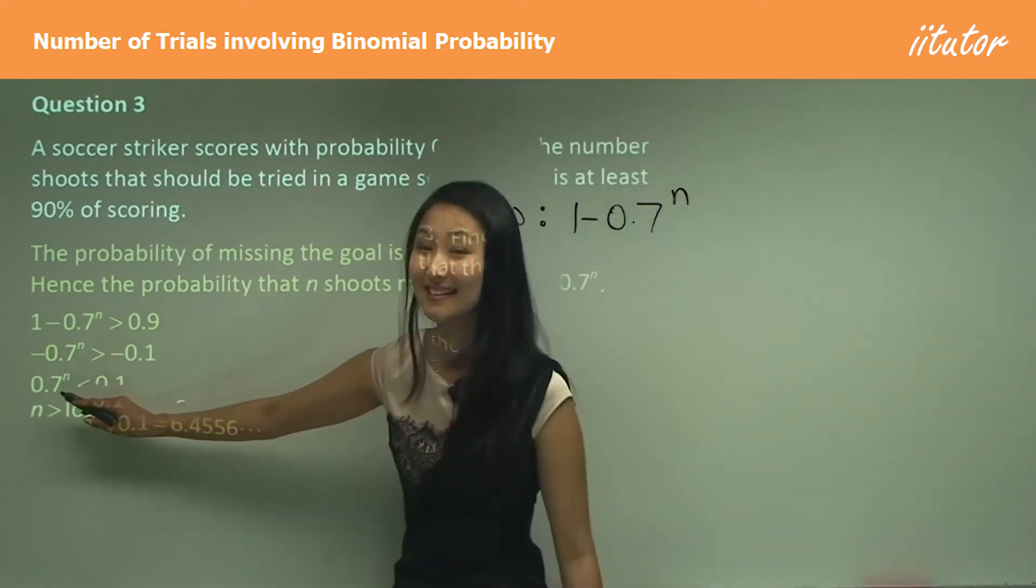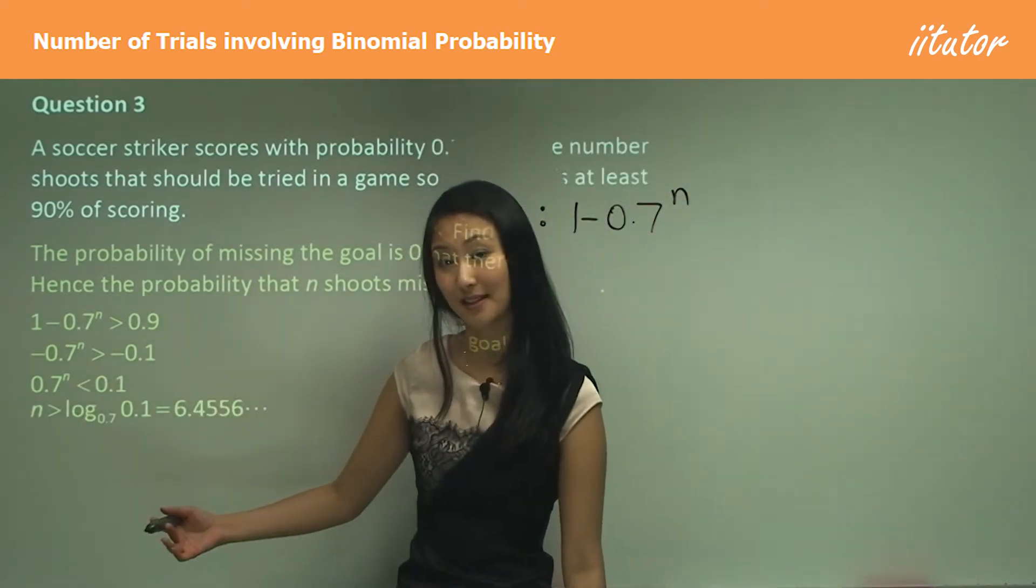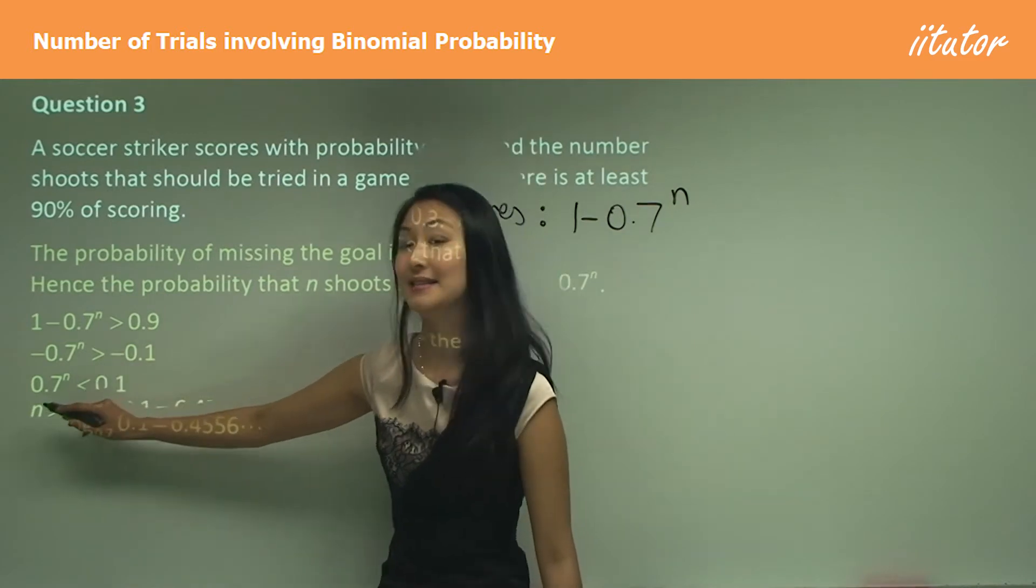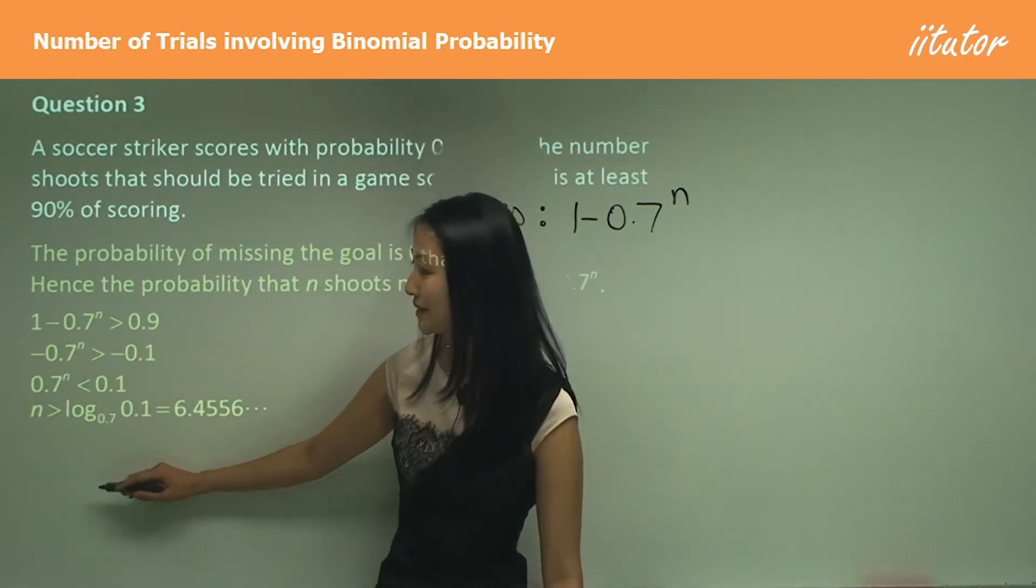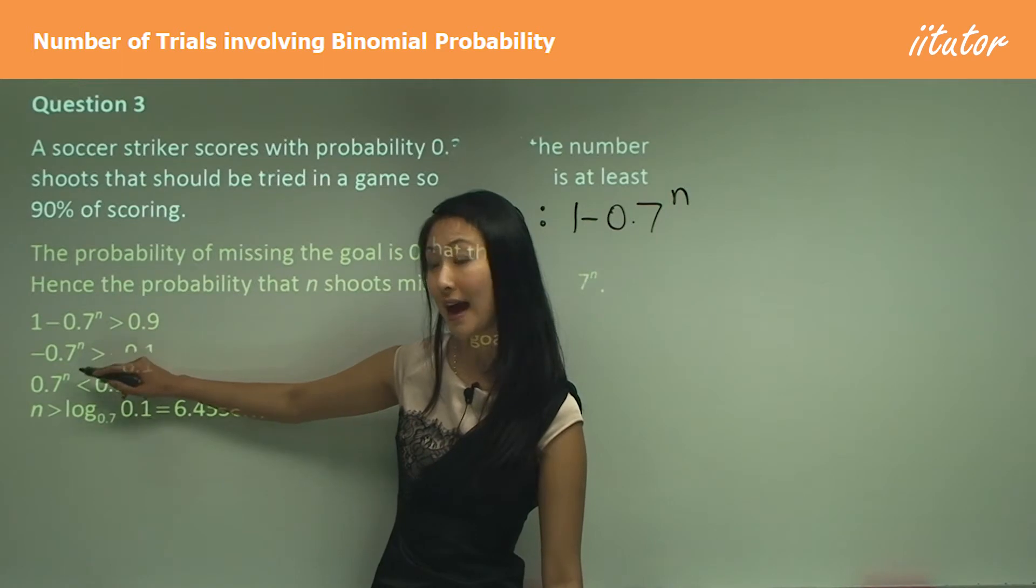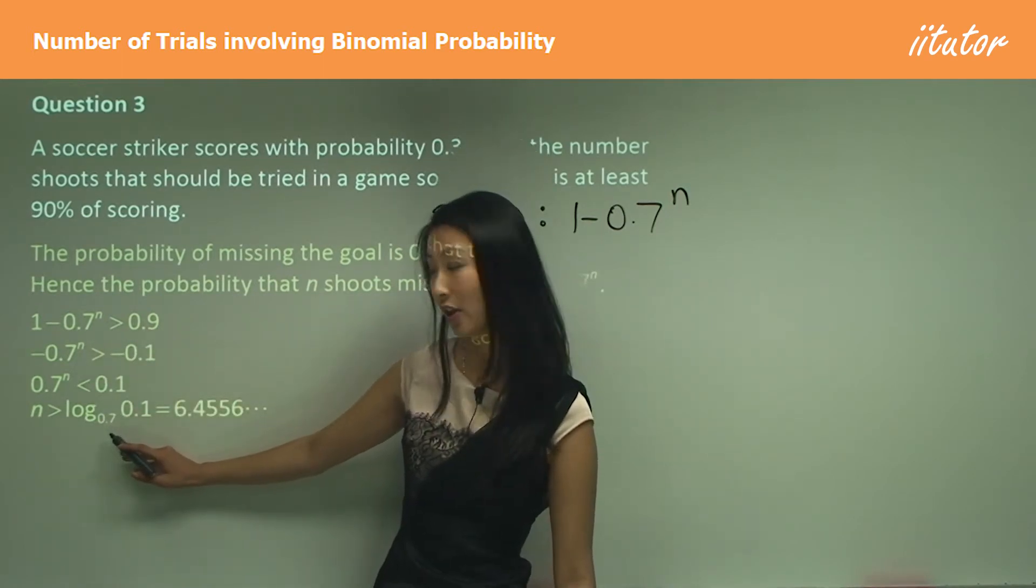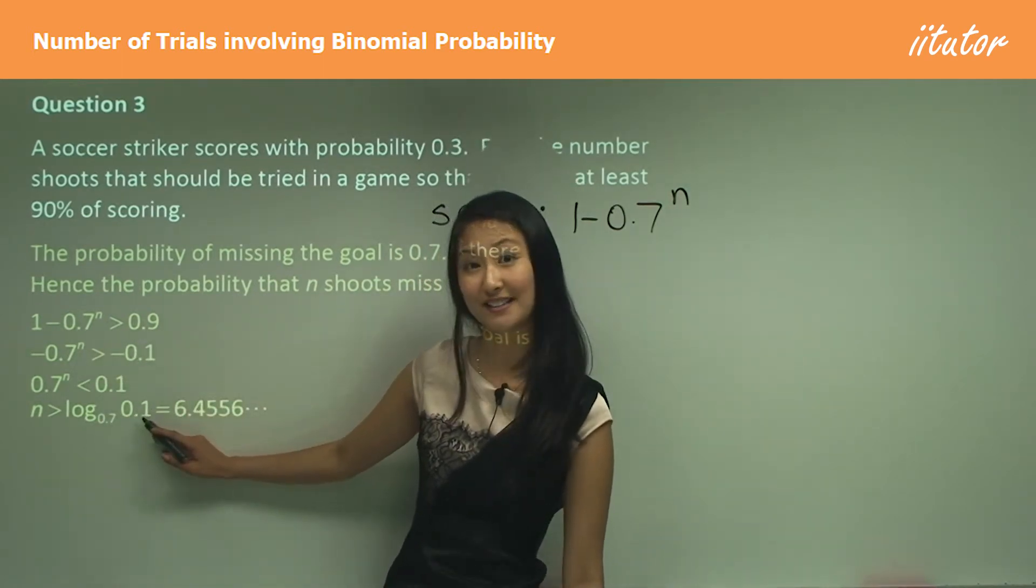Since that is less than 1, we need to flip the sign. So instead of less than, it's going to be greater than like that. Always remember the base of that index here becomes the base of the log and that 0.1 goes there.